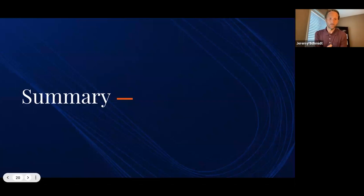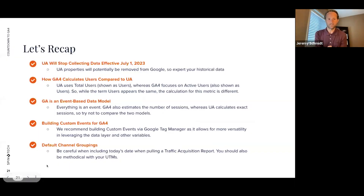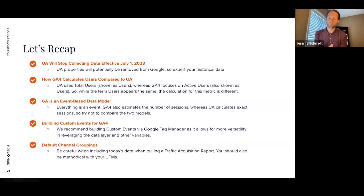To recap the key takeaways: first, Universal Analytics will stop collecting data on July 1st, and potentially that property may be completely removed from the Google Analytics instance. Second, keep tabs on your user counts — 'total users' is everyone who visited your website, similar to what you're used to in Universal Analytics, whereas GA4 focuses on active users, meaning those who actually had an engaged session and showed some form of engagement on the site.